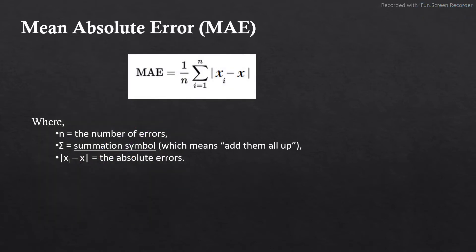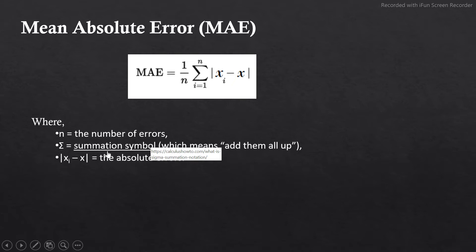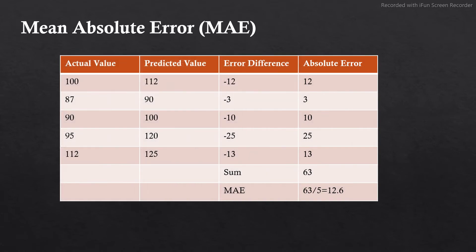Mean absolute error is a very simple metric which calculates the absolute difference between the actual and predicted value. This is the formula of mean absolute error — n is the number of errors, and we take the summation of the absolute difference between the actual value and predicted value, then find the mean.